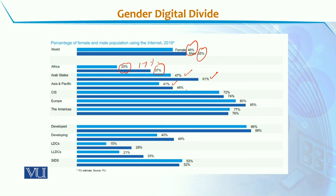If we look at this data in Europe, 85% of men use internet and 80% of women use internet. In Europe this divide is reduced as compared to other regions. If we talk about the Americas, the internet usage is 77% for men and 76% for women — a gap of only 1%, which is almost equal. Here we see near gender equality.